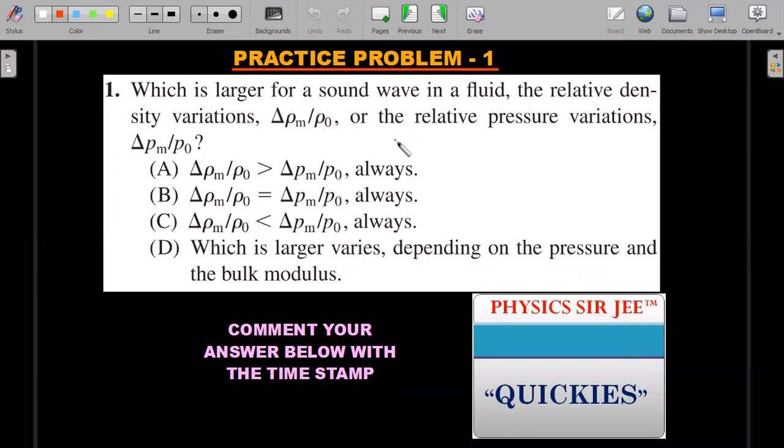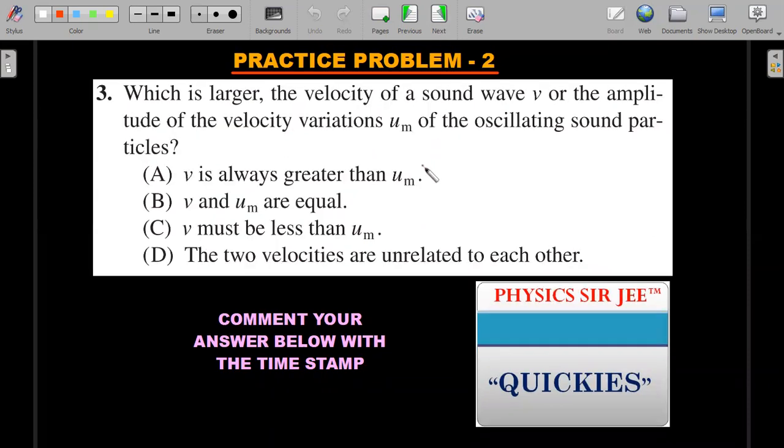This is the first one which tries to relate the relative density variations in a sound wave as compared to the pressure variations. Comment your answer with the time stamp below. I will be able to respond whether you are doing it correctly or not. This is the second problem where you try to calculate or compare the velocity of sound wave with the amplitude of the velocity variations when the sound is traveling through that medium.